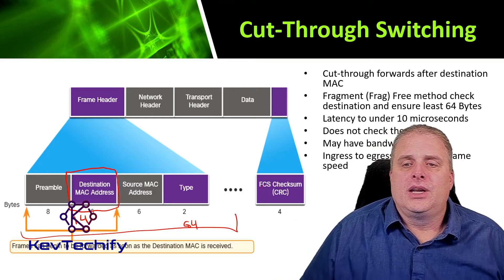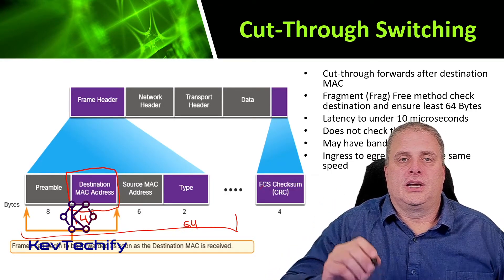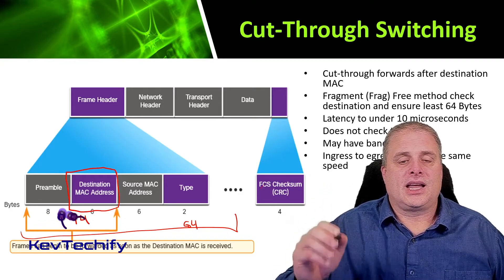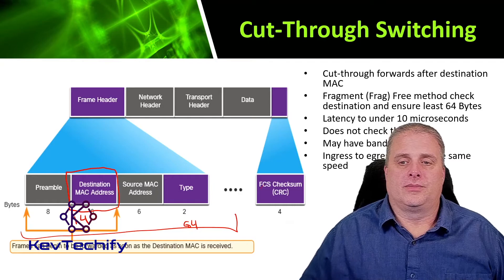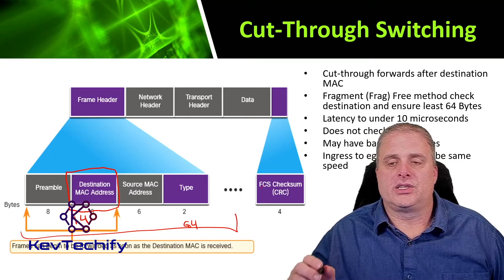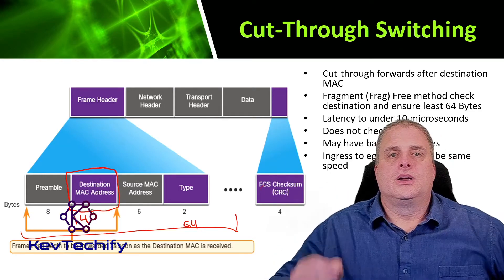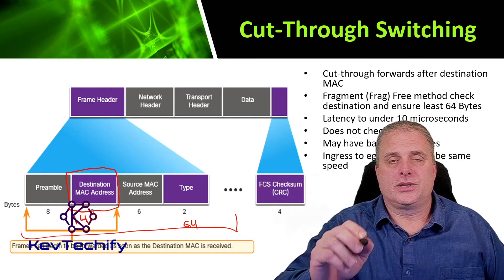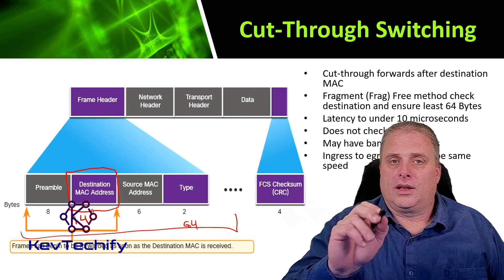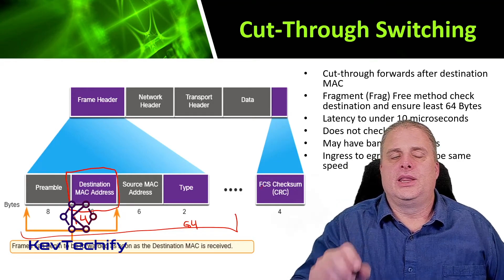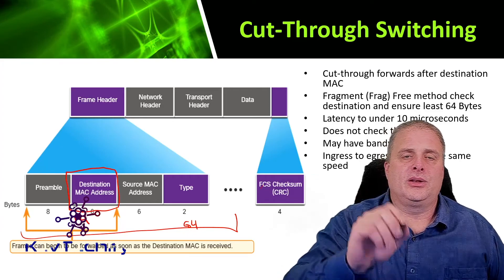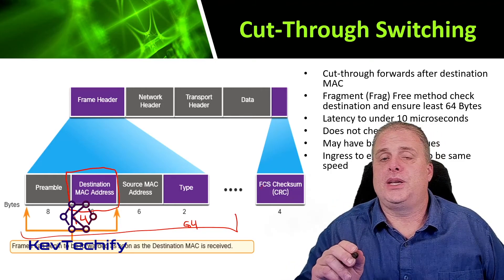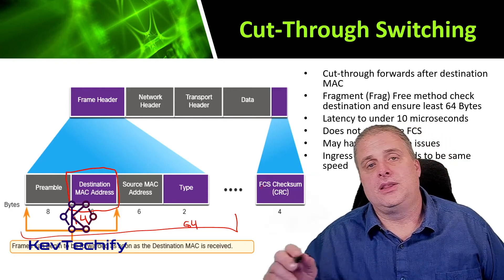You'd use the cut-through method when you want to keep low latency on your network — when you need to get data through really quickly. Skipping the frame check sequence and cyclic redundancy check helps eliminate some bandwidth overhead and lets switches work faster by freeing up RAM. One catch: with cut-through, the ingress and egress ports need to be the same speed. If they can't be the same speed, you need to use store and forward. But if they are the same speed, you can use the cut-through method.